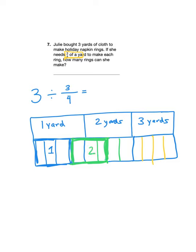Here's another section of one, two, 3/4 of a yard. That's napkin ring number two. Here's another section that's 3/4 of a yard. Whoops, I almost made it 4/4, my bad. 3/4. That's napkin ring number three. And then here's one more section that's 3/4 of a yard of fabric, and that's napkin ring number four. So we can make four napkin rings. 3 divided by 3/4 equals 4.